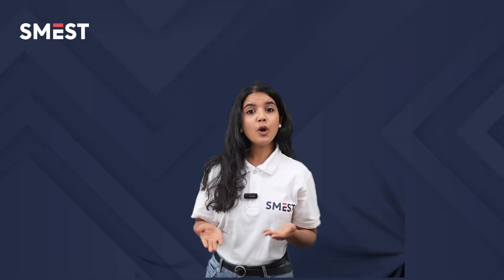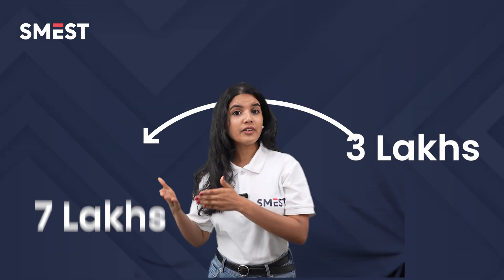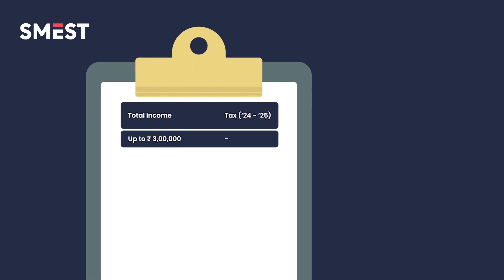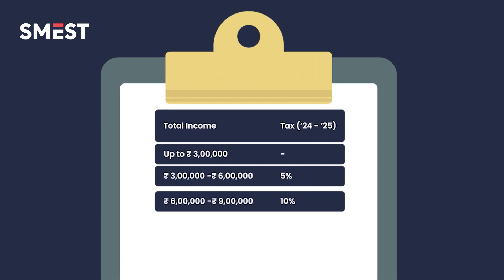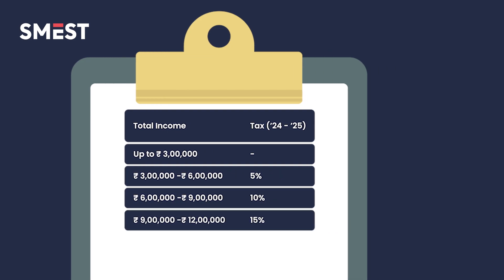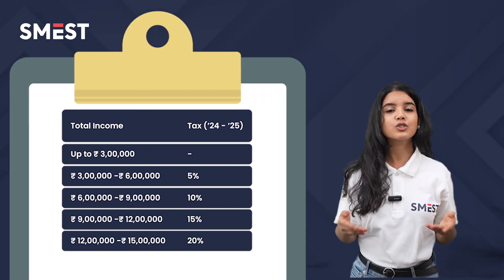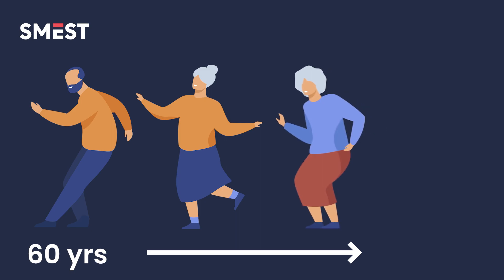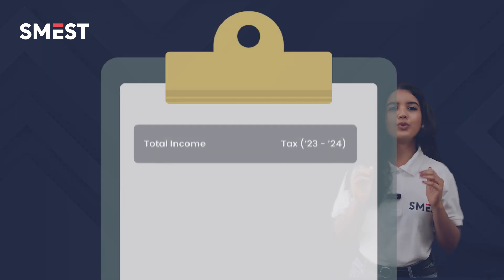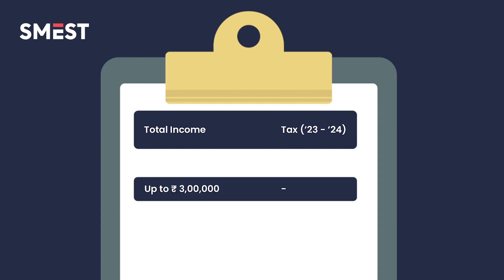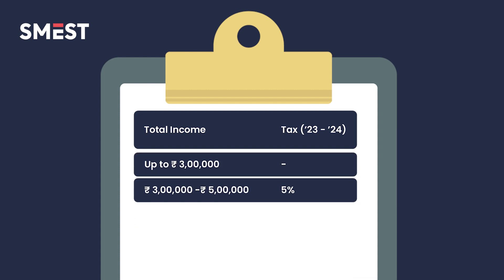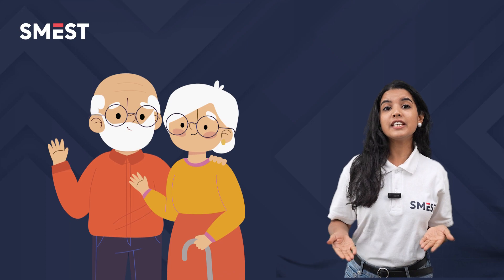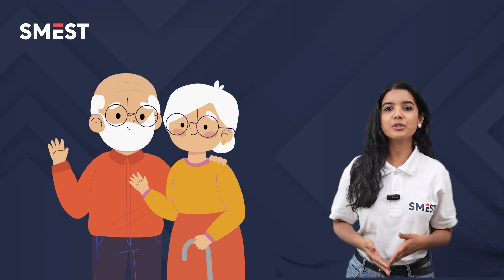Number two is the new regime, where the income slab starts from 3 lakhs, and up to 7 lakhs you don't have to pay any taxes. Here's how you will be taxed: up to 3 lakhs — no tax; 3 to 6 lakhs — 5%; 6 to 9 lakhs — 10%; 9 lakhs to 12 lakhs — 15%; 12 lakhs to 15 lakhs — 20%; above 15 lakhs — 30%. For senior citizens aged between 60 and 80 years, there is a small tax benefit in the old regime: up to 3 lakhs — no tax; 3 lakhs to 5 lakhs — 5%; 5 lakhs to 10 lakhs — 20%; above 10 lakhs — 30%.